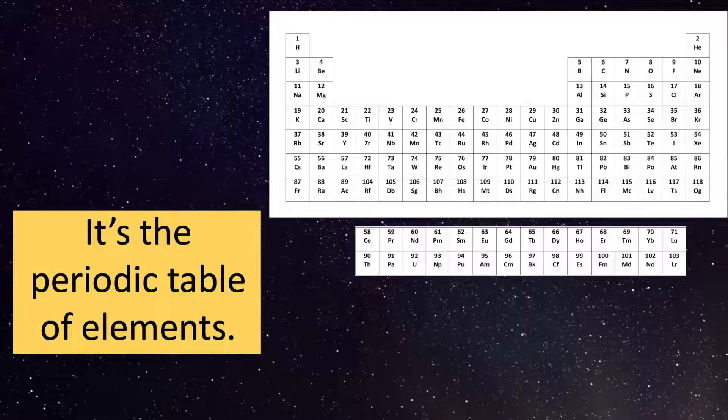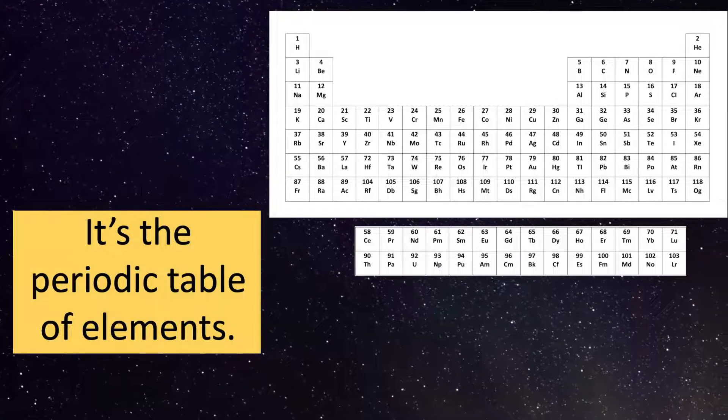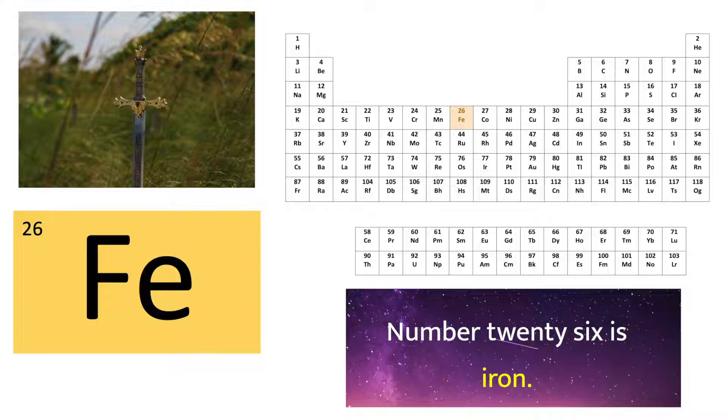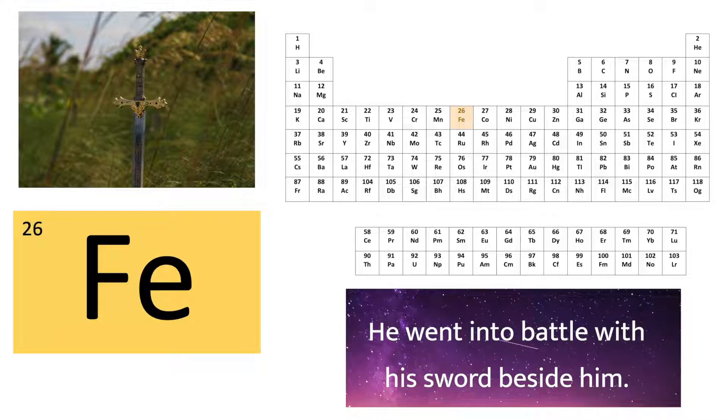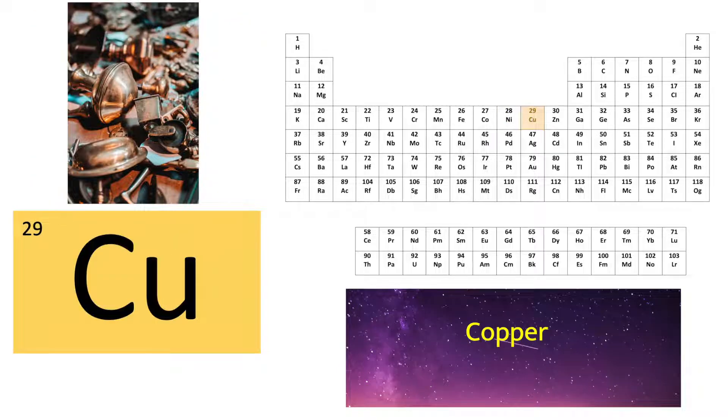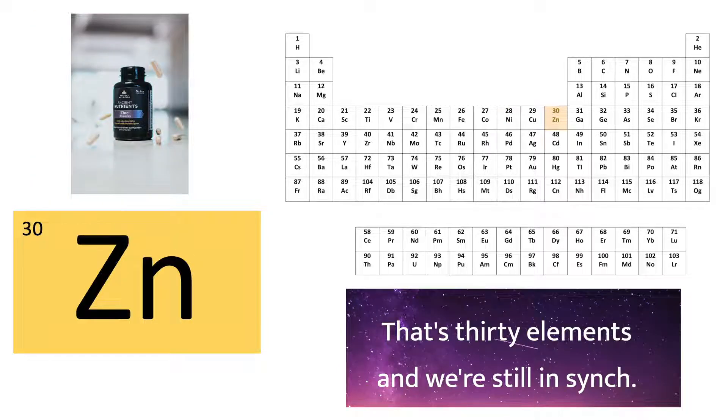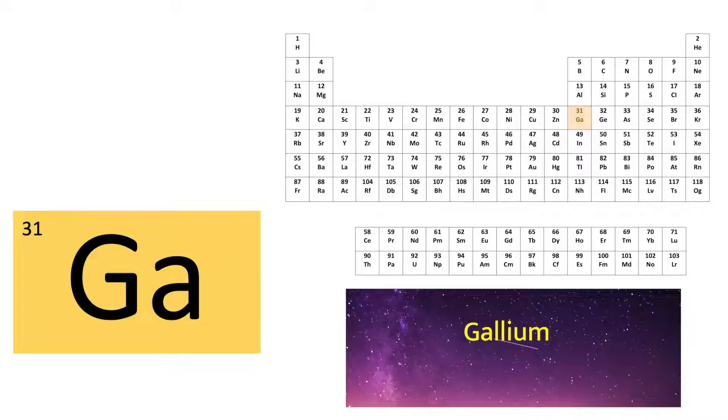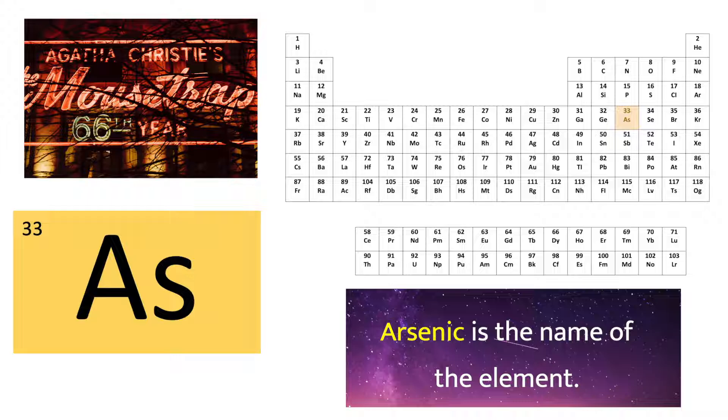Number 26 is iron. He went into battle with his sword beside him. Cobalt, nickel, copper and zinc. That's 30 elements and we're still in sync. Gallium, germanium. Number 33 could be deadly. Arsenic is the name of the element. The villain in the whodunit put it in the recipe.